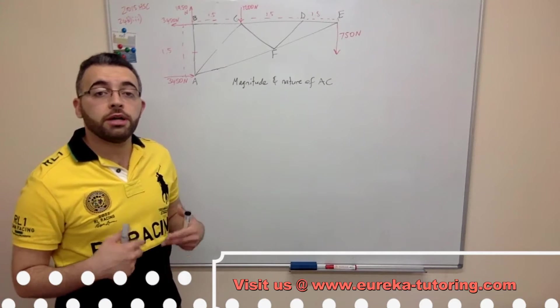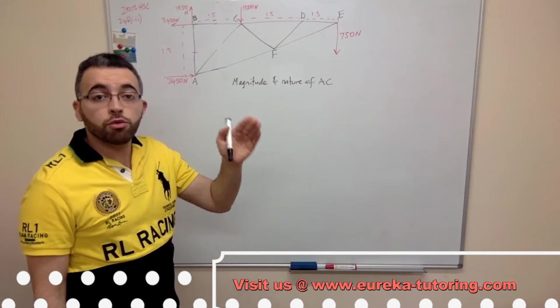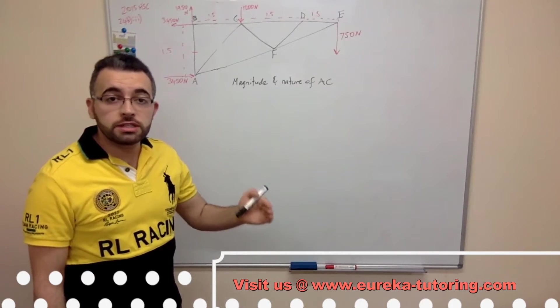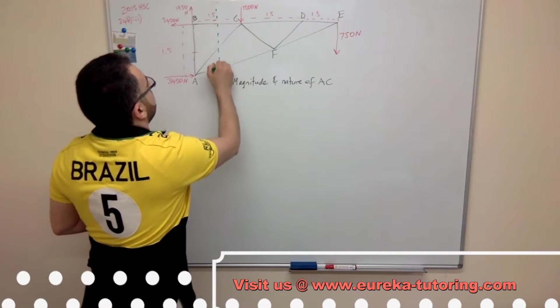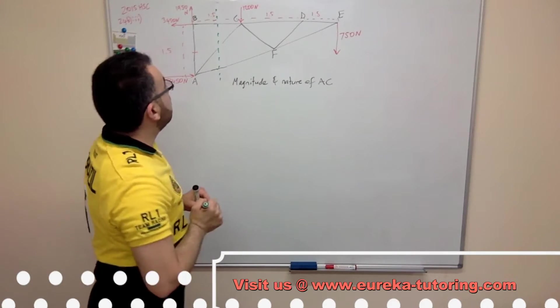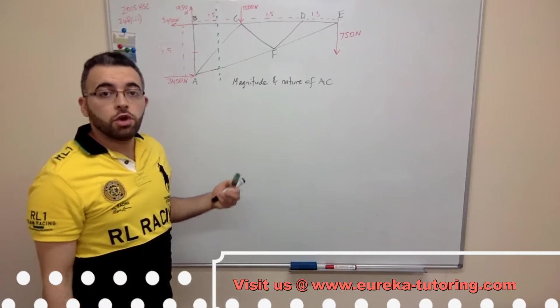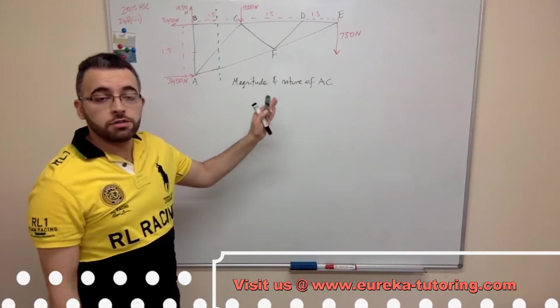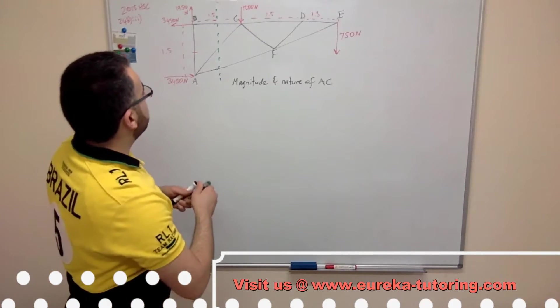To do this we need to incorporate method of sections. So we have to make a cut through the member in question which in this case is AC. So cut through AC. Now when we cut through AC we need to consider which side we want to analyze. In this case I would like to analyze the right hand side due to its ease of calculation.